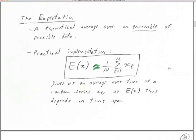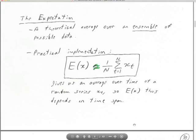We implement the expectation via this averaging process — just taking the average over some number of samples. X sub t is a time series produced by a random process, and the expected value is the time average. That's not what the expectation is defined as — this is an approximation, how we implement it. That's because we never have the ensemble. As implemented, the expectation gives us an average over time of a random series, and the value we get depends on how much time we include, what our N is.